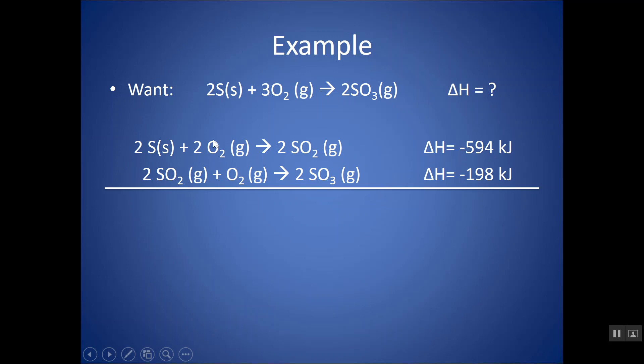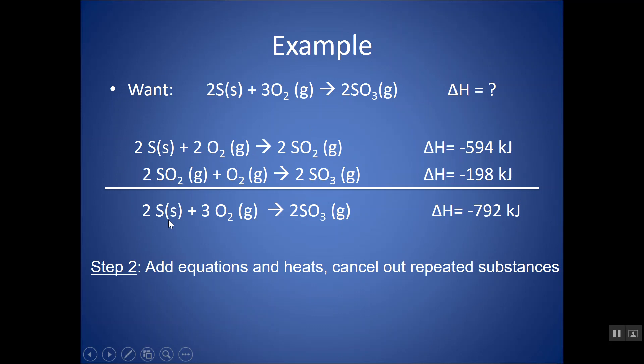Does anything cancel out? Yes, 2SO2 and 2SO2 cancel out completely. Does anything add up? 2O2 and O2 are on the same side, so they're going to add up. So, notice anything on the same side adds together. Anything on opposite sides, some of them might cancel. And, I do get now my target equation. So, now I can add up the delta H's. Make sure you've manipulated them already. And, I get that my delta H for the overall is negative 792.